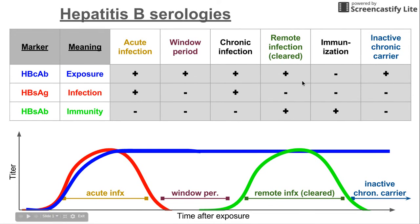The window period is a little interesting because the hepatitis B surface antigen has been cleared, but the surface antibody has not yet started to increase. So during this window period, the person has been exposed and the core antibody is positive, they're no longer infected as the antigen went down, but they're not yet immune either, so the surface antibody is still negative.